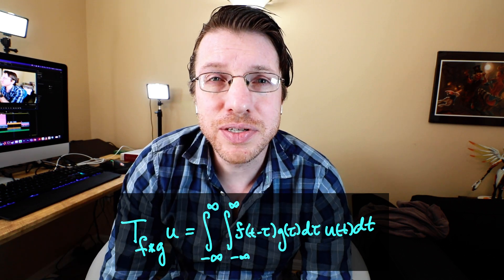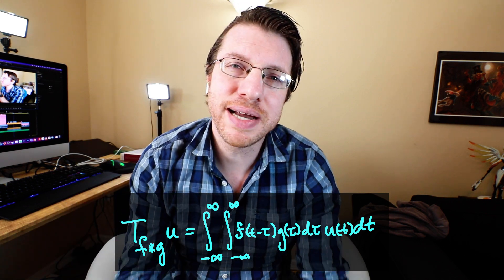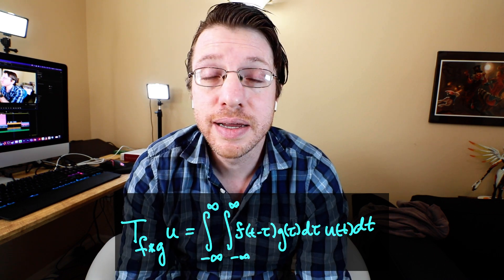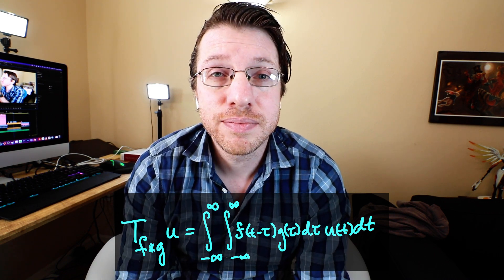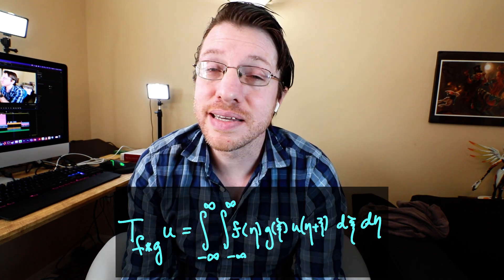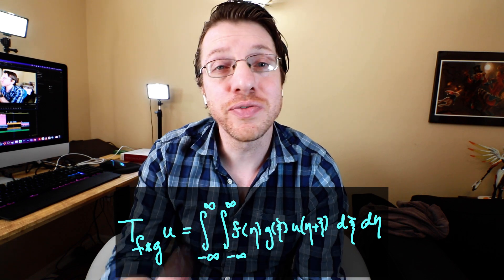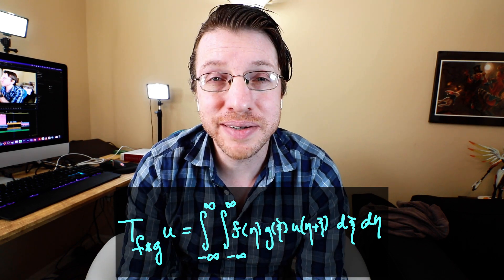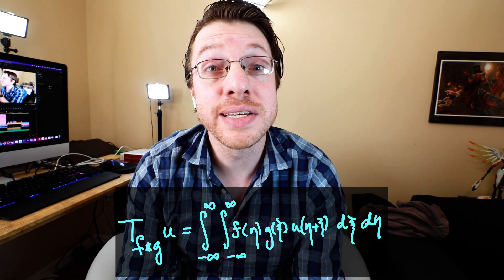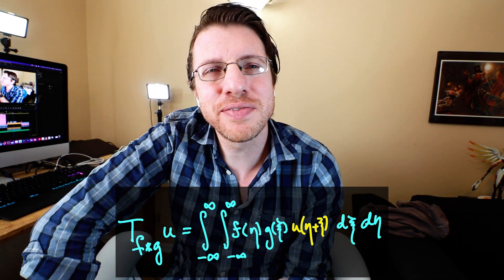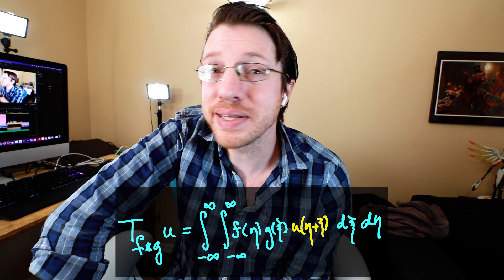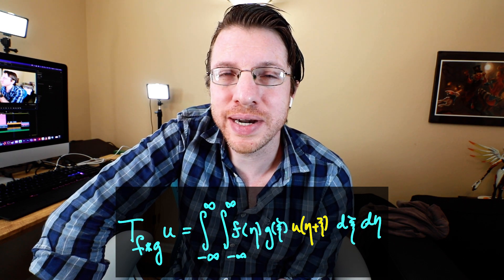Next, I'm going to take the t - τ and replace it with a new variable η, and replace τ with ξ. Once I do that, I have a double integral from -∞ to ∞ of f(η) times g(ξ) times u(η + ξ). That u term is now a function of two variables, but the integration is only taken with respect to one variable at a time.